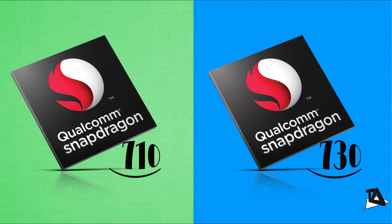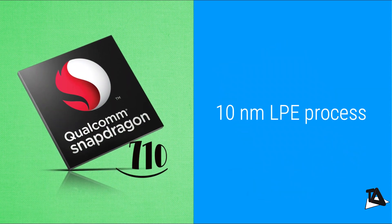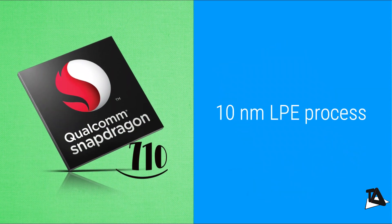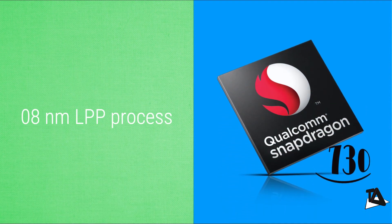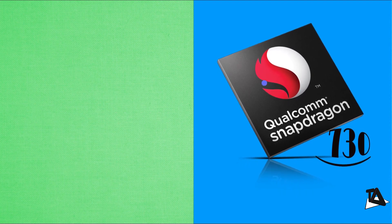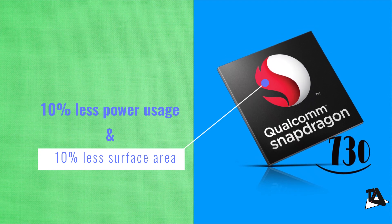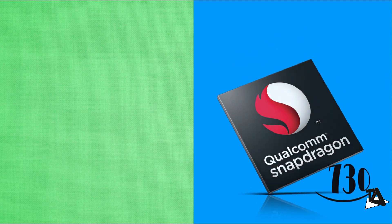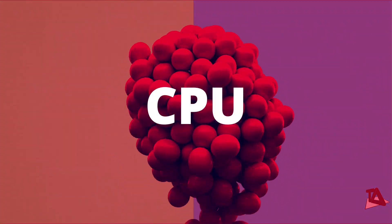Starting with the manufacturing process: Snapdragon 710 uses a 10-nanometer low-powered early node built by Samsung, while Snapdragon 730 uses an 8-nanometer process by Samsung. The 8nm LPP uses 10% less power than the 10nm LPE, and moreover has 10% less surface area.